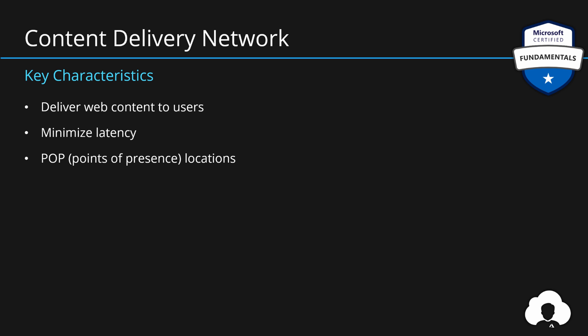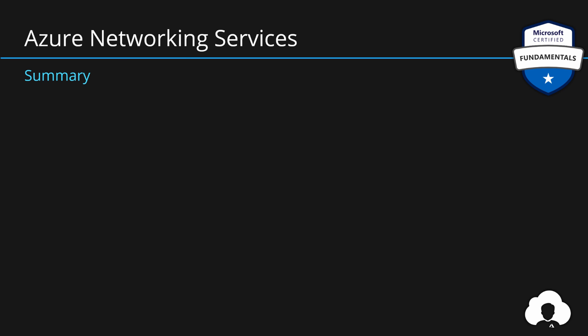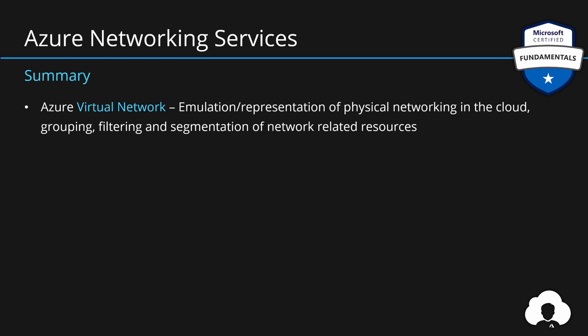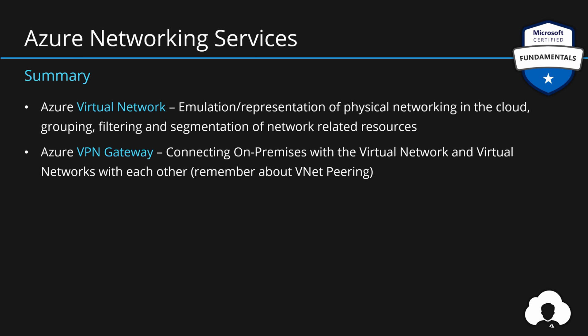Let me summarize all of the networking services we've learned today. First, we have Azure Virtual Networks — the service that allows us to represent our physical networking in the cloud and allows us to group, filter, and segment the network and all the related resources. Additionally, we learned about VPN Gateway, a service that allows us to connect our on-premise networks with cloud networks and allow them to communicate with each other. This service also allows us to connect virtual networks in Azure — and remember that VNet Peering as a feature also allows for that.